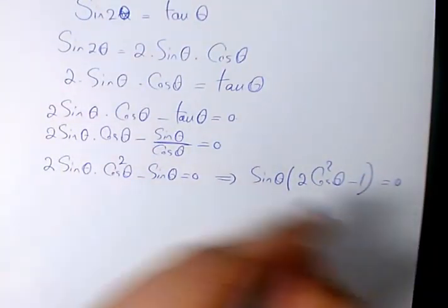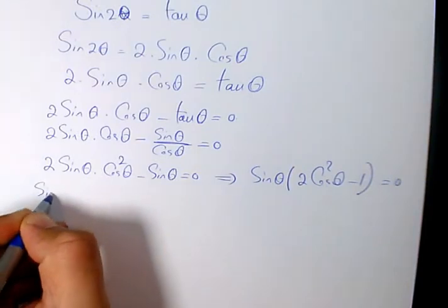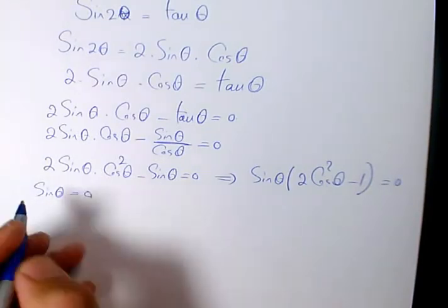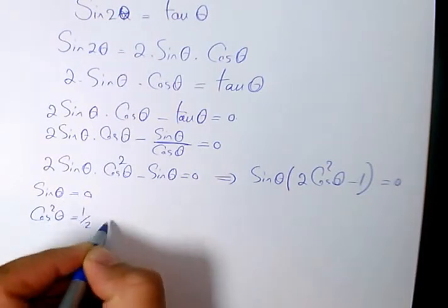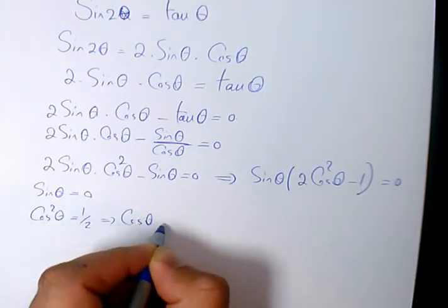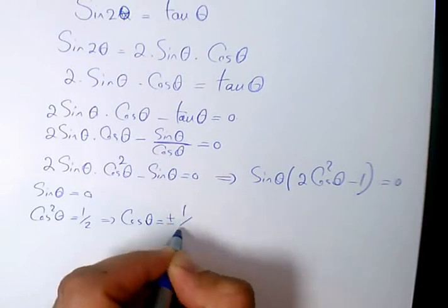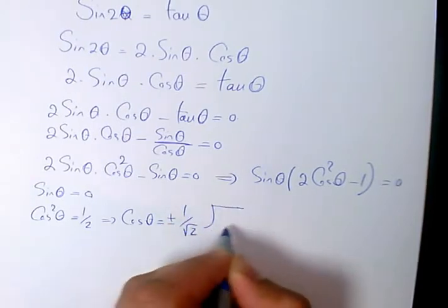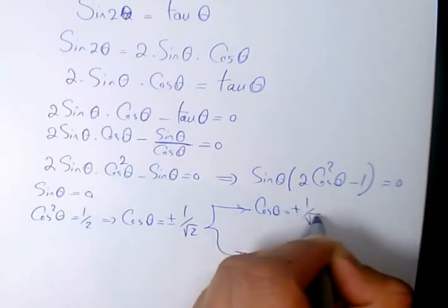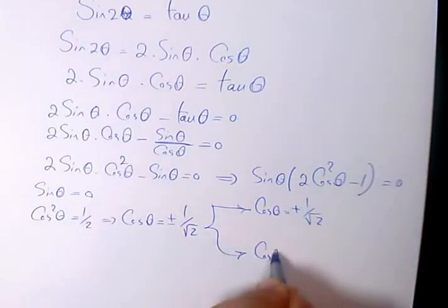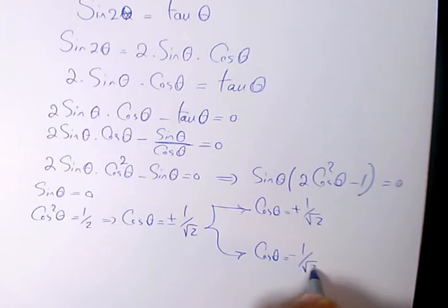Then you can say we have some cases: one of them when sin(θ) = 0, and the other one when cos²(θ) = 1/2, which means that cos(θ) will be ±1/√2. So we have two cases when cos(θ) is positive 1/√2, and the other one when cos(θ) equals negative 1/√2.